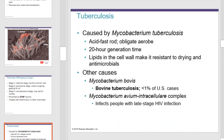Tuberculosis is caused by Mycobacterium tuberculosis, which is an acid-fast rod, obligate aerobe organism with about a 20-hour generation time. Lipids in the cell wall make it resistant to drying and antimicrobials. Other causes include Mycobacterium bovis — bovine tuberculosis accounts for less than 1% of U.S. cases — and Mycobacterium avium-intracellulare complex, which infects people with late-stage HIV infection.